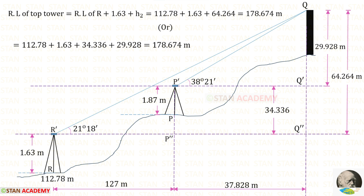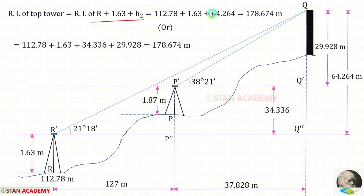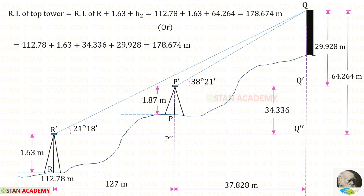Let us see the second method. With the reduced level of R we add the height of instrument (1.63) to reach the instrument axis line at R, then add S (34.336) to reach the instrument axis line at P, then add H1 (29.928) to get the top of the tower. This also gives 178.674 metres. In both methods we get the same answer. Now we are going to end this session. Thank you for watching this video.